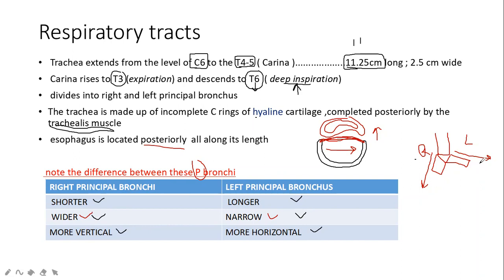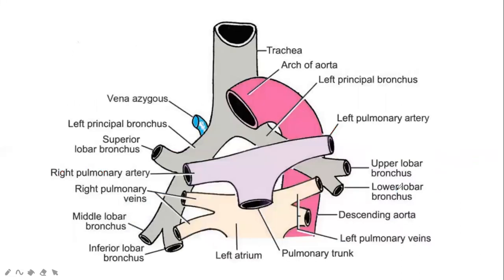Looking at this diagram: the trachea divides at the carina into two bronchi. Note that some textbooks mislabel the right and left — so even textbooks can make mistakes. You can confirm: the right is shorter and more vertical, while the left is longer and more horizontal.